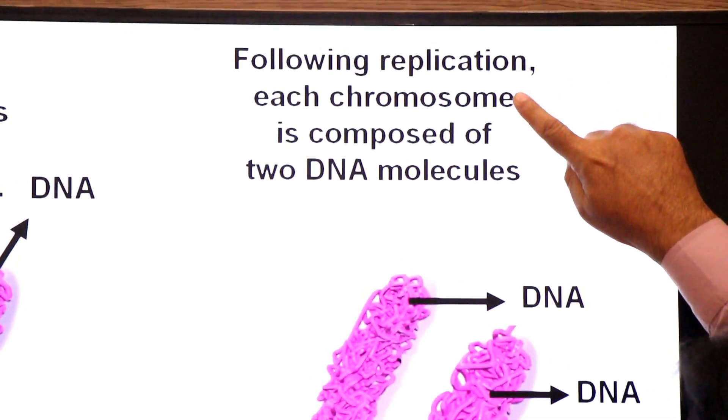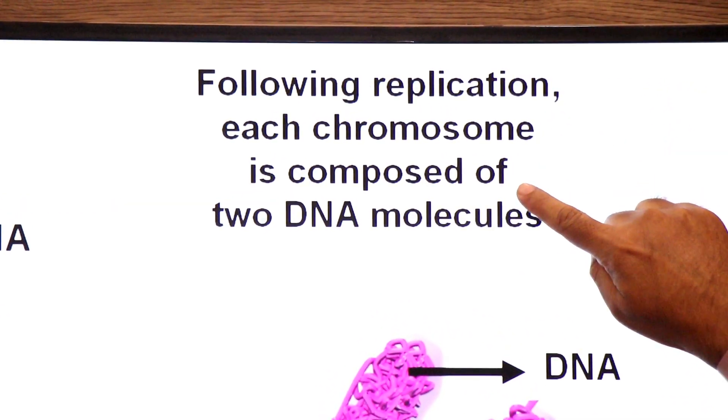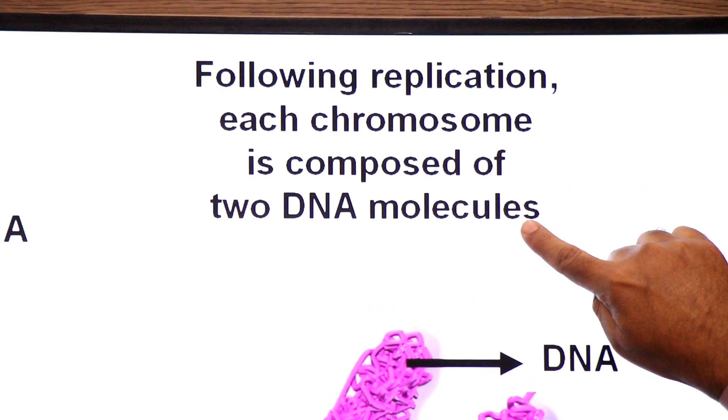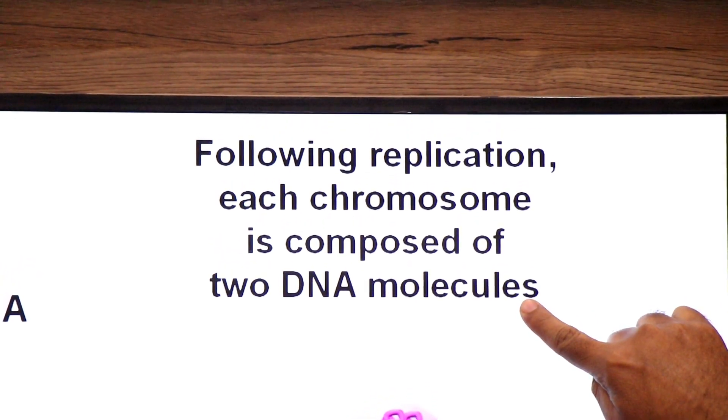Following replication, each chromosome is composed of two DNA molecules. Replication occurs during interphase, in the S (synthetic) phase.